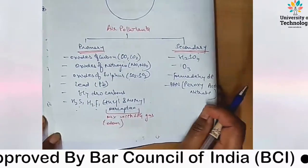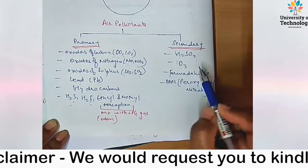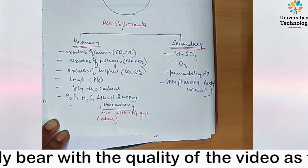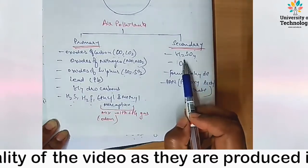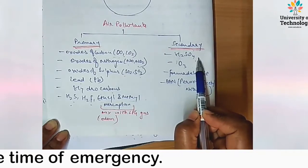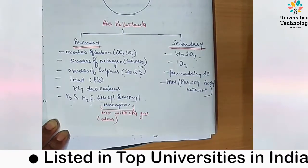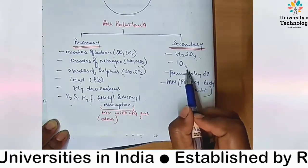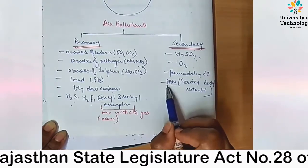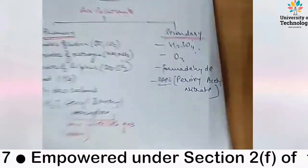Secondary pollutants form when primary pollutants combine with moisture present in the earth's atmosphere. For example, sulfur dioxide or sulfur trioxide combined with water forms sulfuric acid (H₂SO₄), which causes acid rain, damages crops, and decolorizes marble. Ozone is also a secondary pollutant. Formaldehyde and peroxy acetyl nitrate (PAN) are important secondary pollutants — PAN is frequently asked in competitive exams.